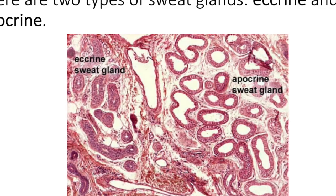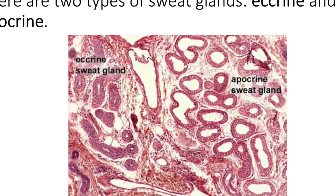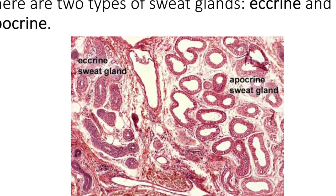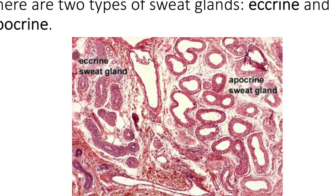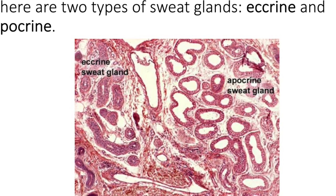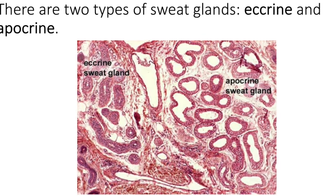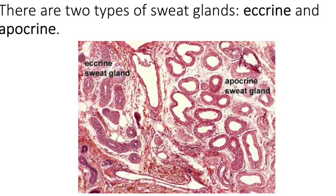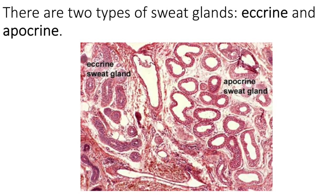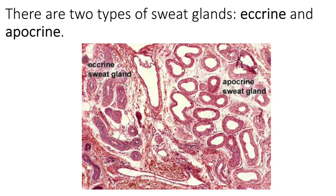Apocrine sweat glands, on the other hand, are special sweat glands that are located only in the axilla, the anus, and the genitalia. They produce a different type of sweat — a more fatty, odoriferous type of sweat that bears a very important component called a pheromone. A pheromone is a signaling molecule used in mate attraction.